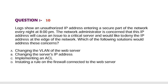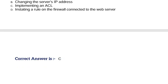Question: Logs show an unauthorized IP address entering a secure part of the network every night at 8 PM. The network administrator is concerned that this IP address will cause an issue to a critical server and would like to deny the IP address at the edge of the network. Which of the following solutions would address these concerns? Option A, changing the VLAN of the web server. Option B, changing the server's IP address. Option C, implementing an ACL. Option D, instating a rule on a firewall connected to the web server. Correct answer is Option C.